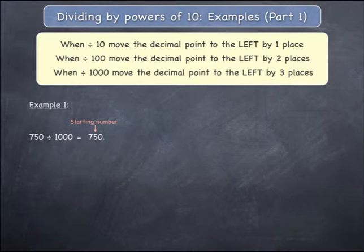Since you are dividing by 1000, which has three zeros, the decimal point needs to move to the left by three jumps. The first jump moves it from immediately after the zero to between the 5 and the zero.